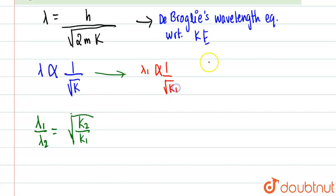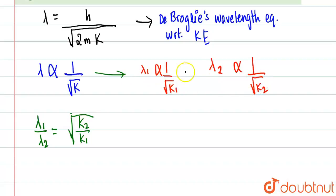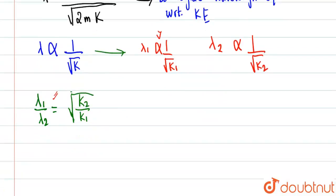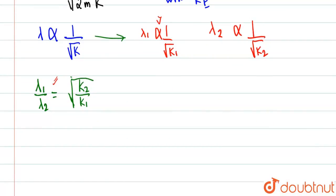And λ₂ is inversely proportional to √k₂. If we divide these two proportionality expressions, we can form an equality — proportionality signs can be divided and multiplied to form equality. So we get: λ₁ / λ₂ = √(k₂ / k₁).